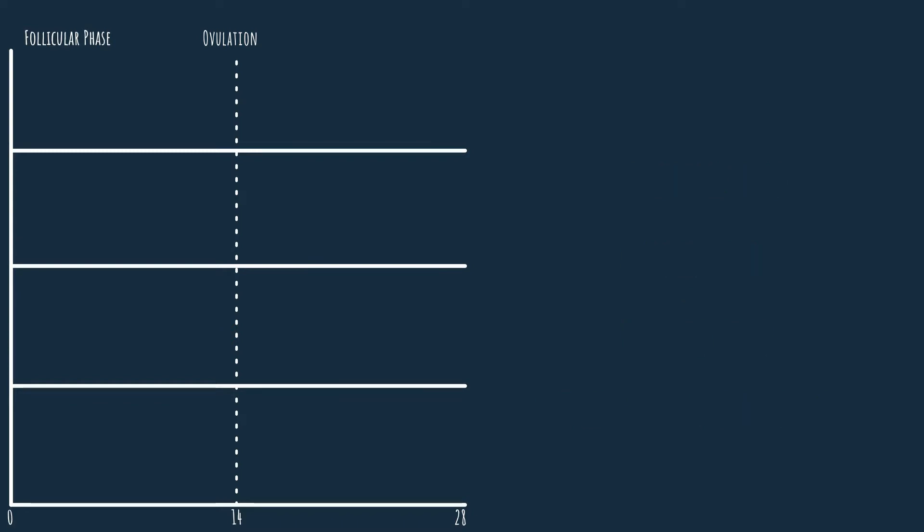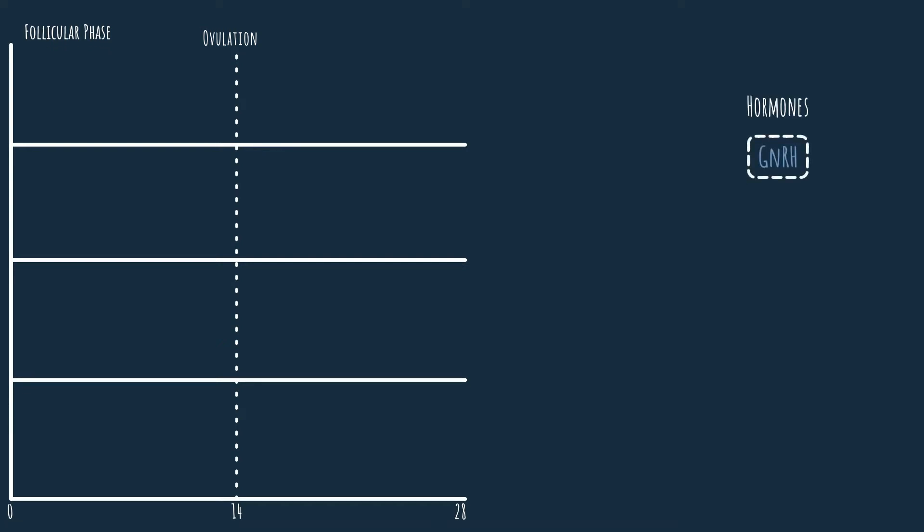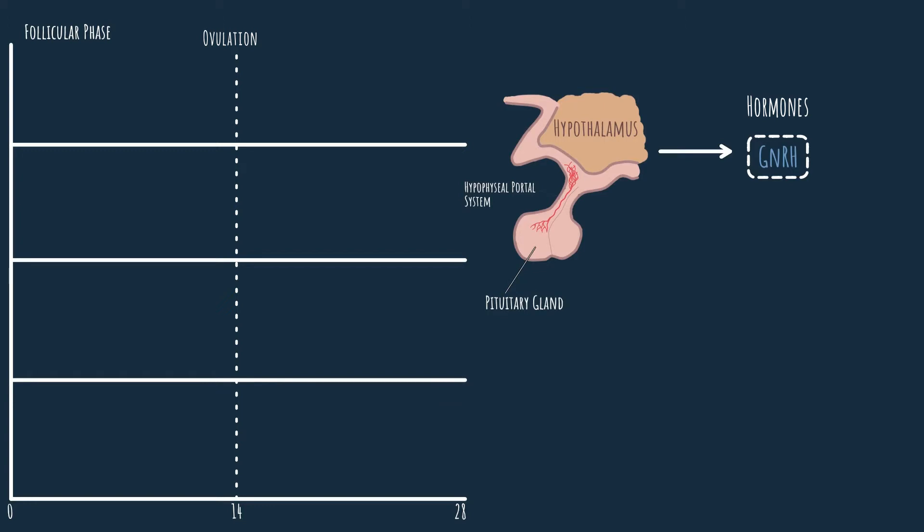Without further ado, I present you the initiator of the cycle: gonadotropin releasing hormone. GnRH is secreted from the brain, or to be more precise from the hypothalamus. The main function of the hypothalamus is maintaining the homeostasis of the body. In our case it controls the menstrual cycle by secreting GnRH. After its secretion, GnRH travels through a system of blood vessels called the hypophysial portal system. This portal system allows the hypothalamus to communicate with another part of the brain called the hypophysial gland, also known as the pituitary gland.